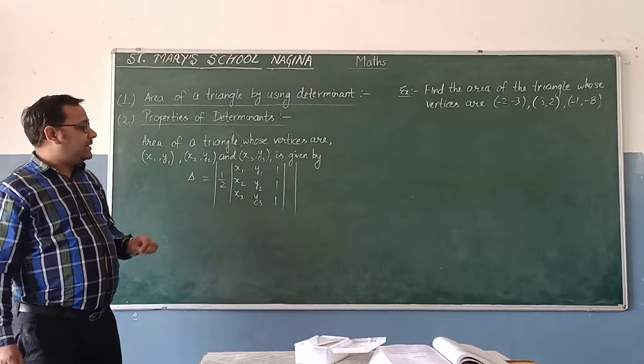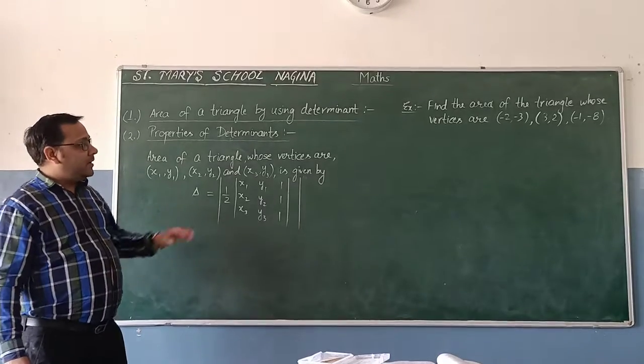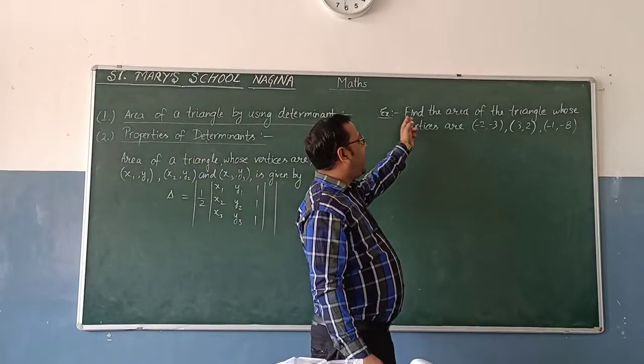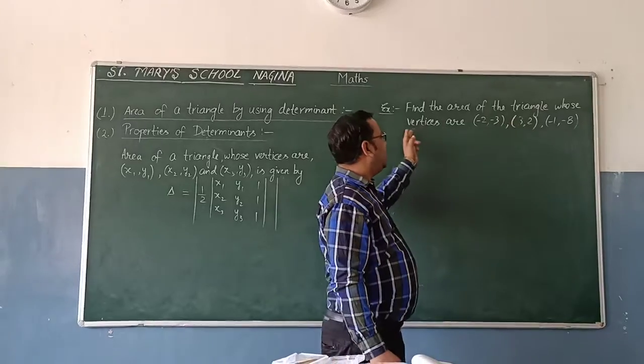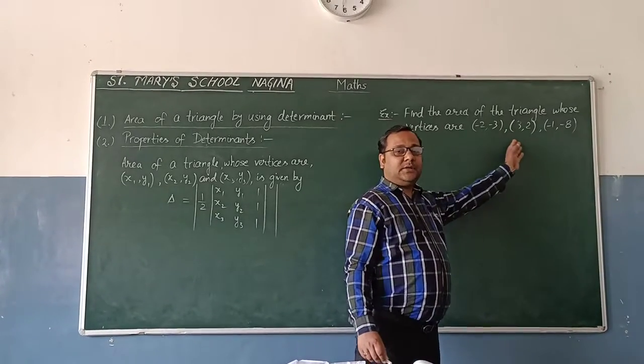One example, by giving one example, I will explain this formula. Now you can see this example: find an area of a triangle whose vertices are these, two vertices are given.